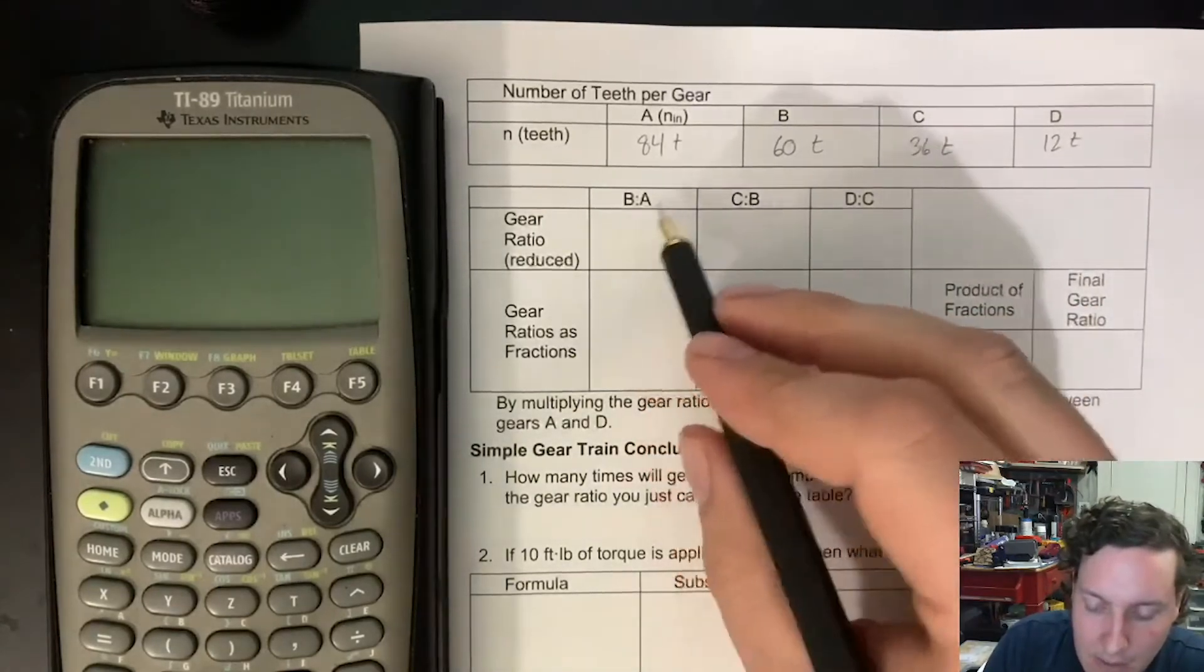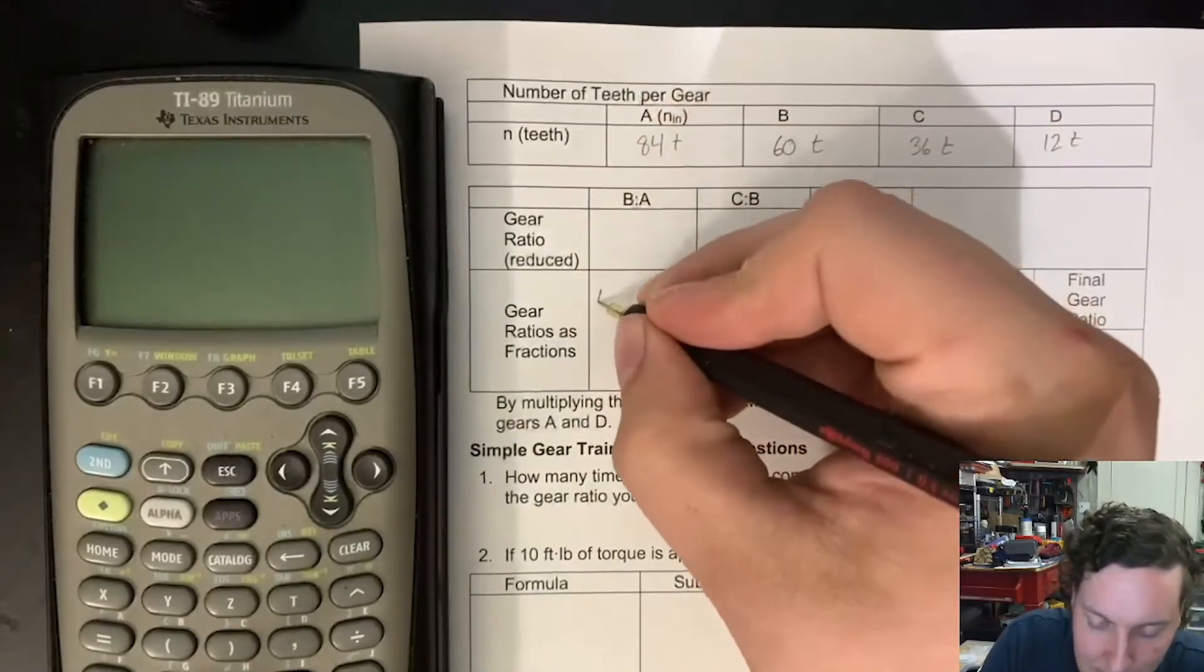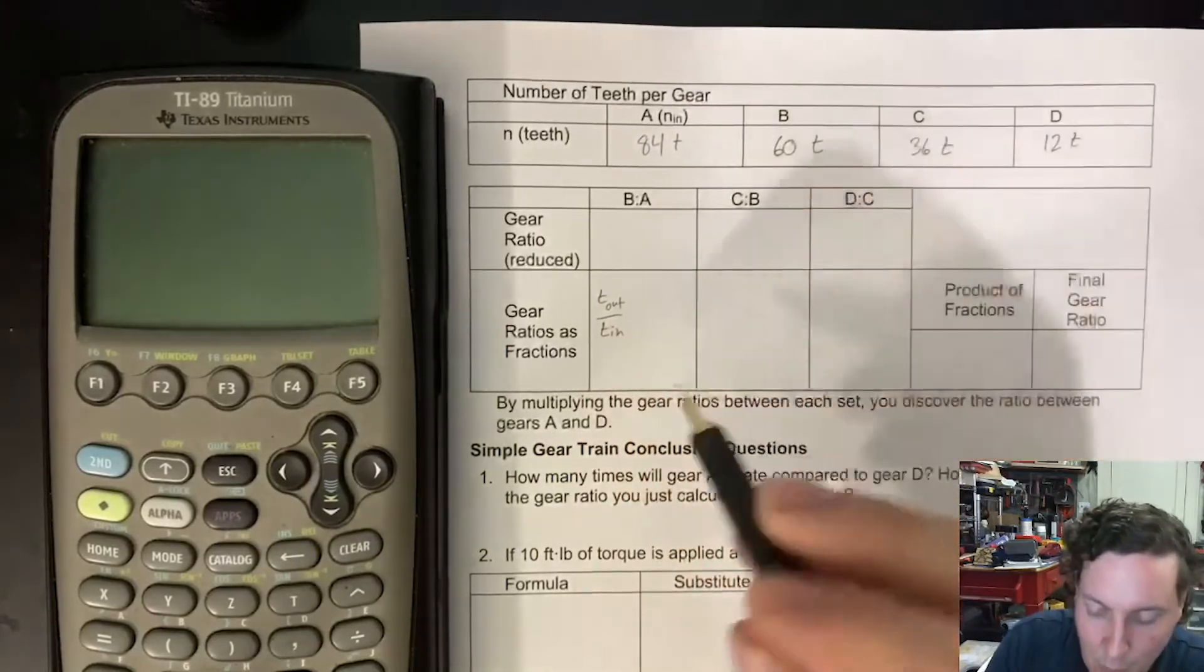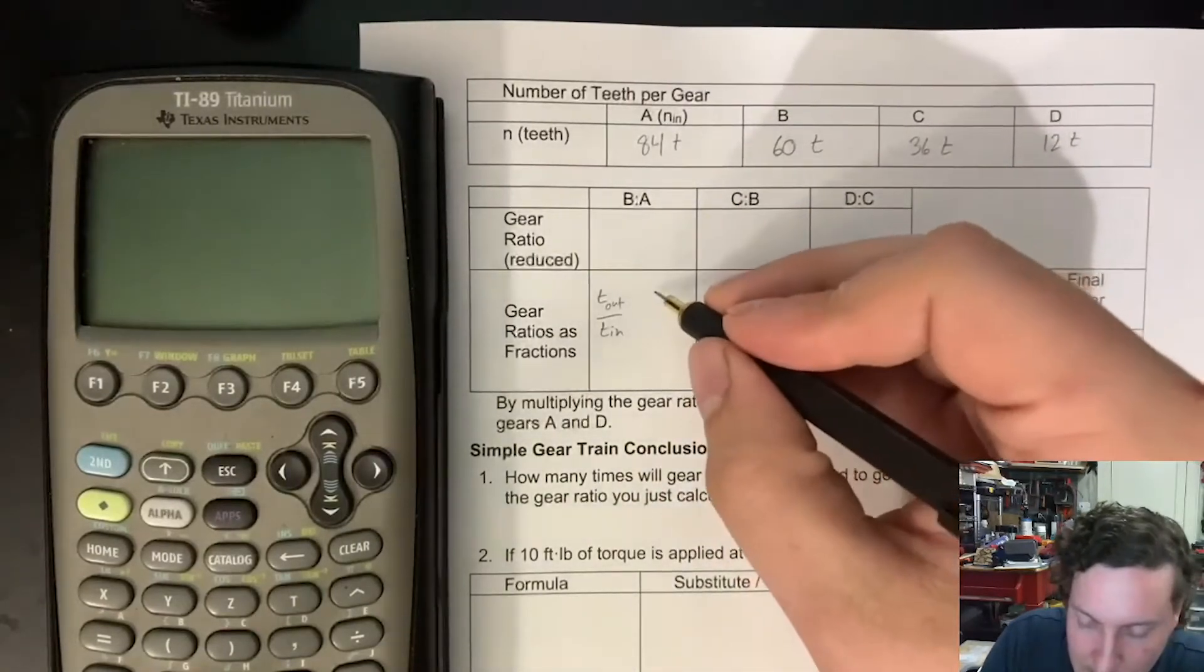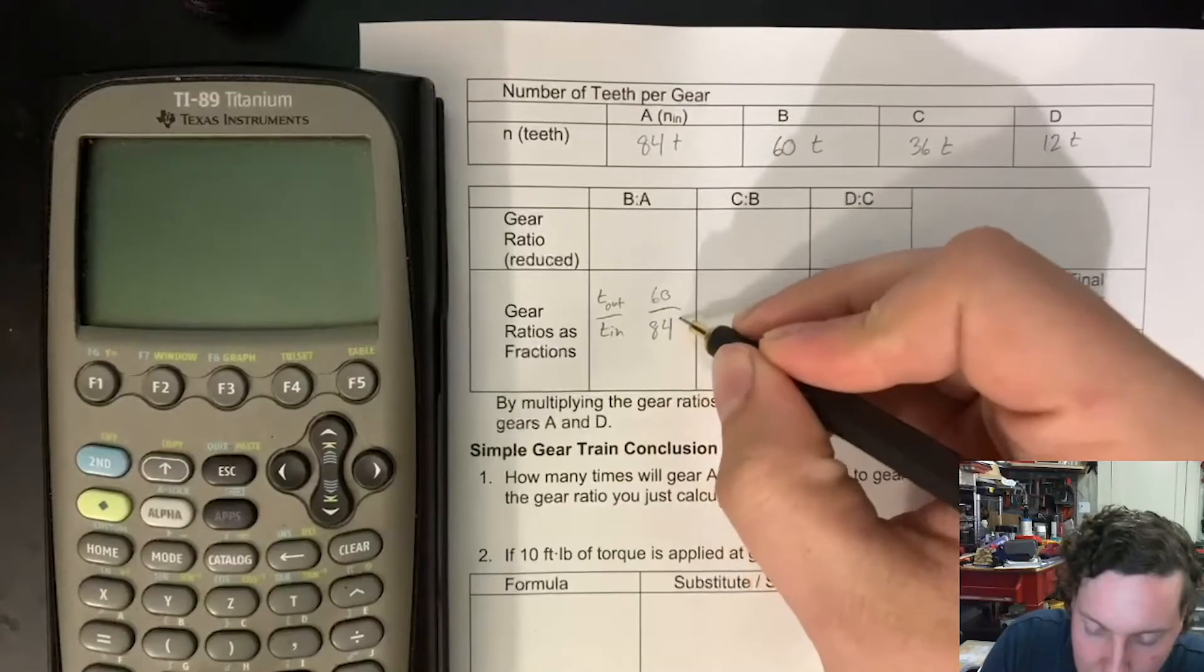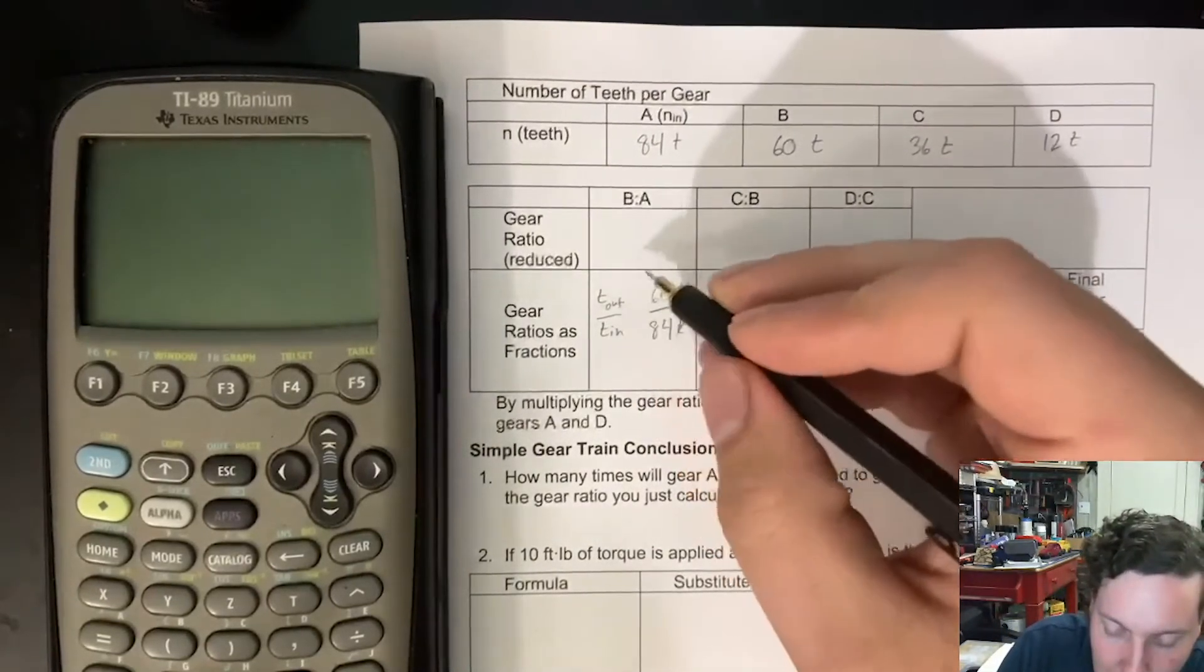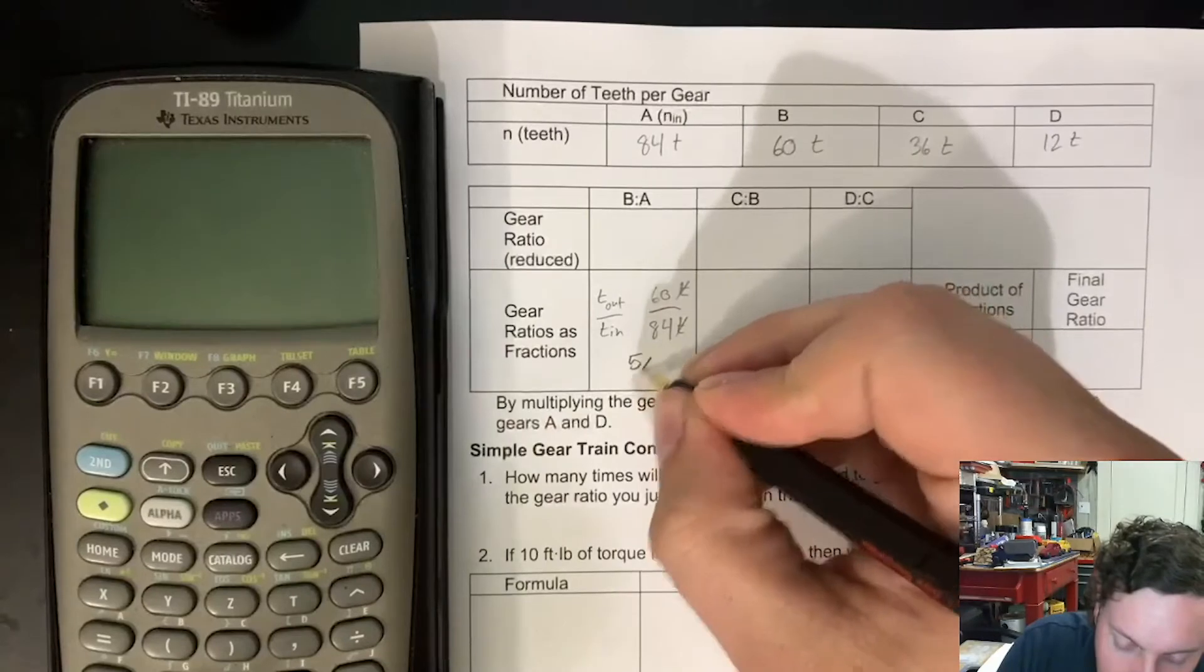Now paying attention to your formula sheet, knowing that it's the number of teeth on the output divided by the teeth of your input, your driver, we're basically going to start filling in the data. So if we know we're going to have 60 teeth from gear B and then 84 teeth from the driver, the units cancel out and we can simplify. These are divided by 12 so we can say that this is 5 sevenths.